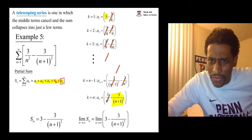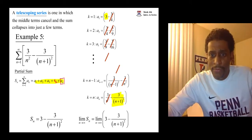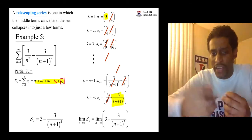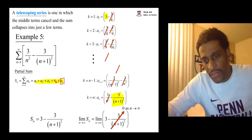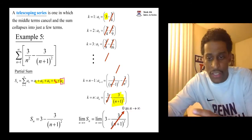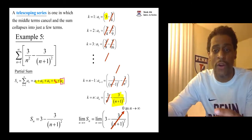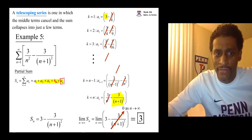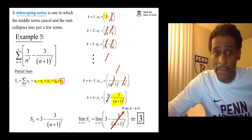As n goes to infinity, that second term, the term with the n plus 1 quantity squared in the denominator, that's going to blow up. 3 divided by something that gets very large, gets very small. That term goes to 0. Not that the limit is 0, but that one term goes to 0 and the limit is 3.